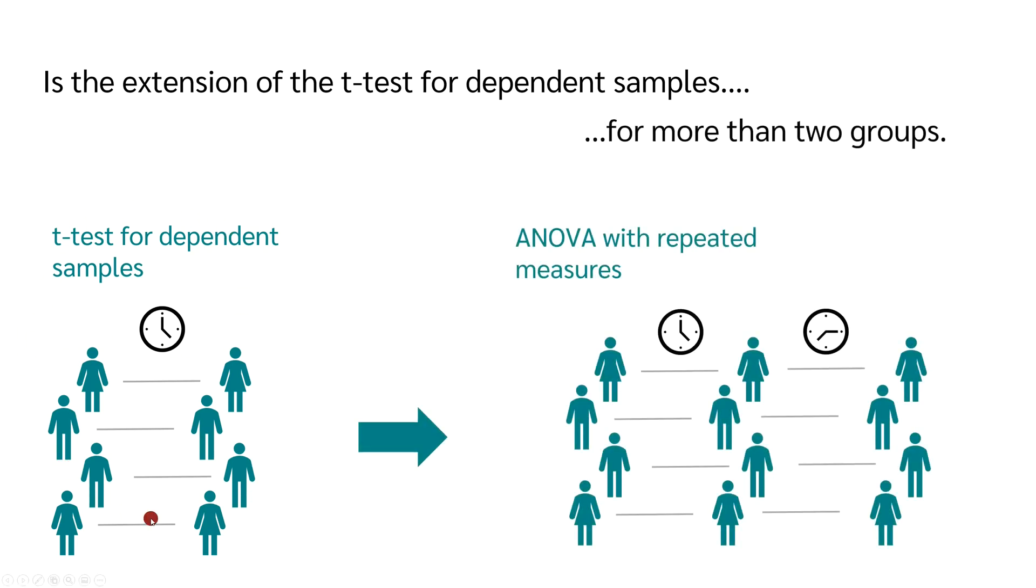In the t-test for dependent samples, we test whether there is a difference between two dependent groups. If we want to test whether there is a difference between more than two dependent groups, we use the analysis of variance with repeated measures.